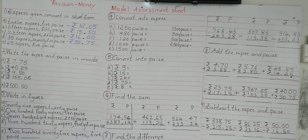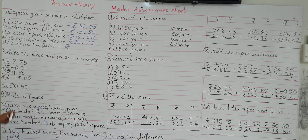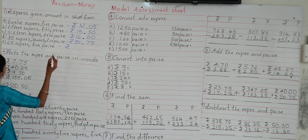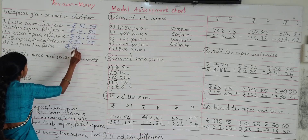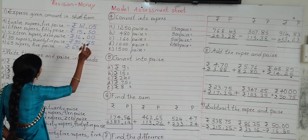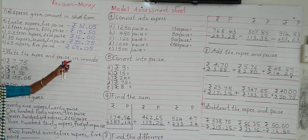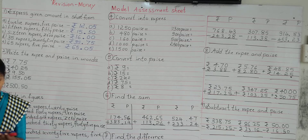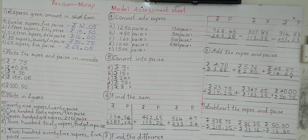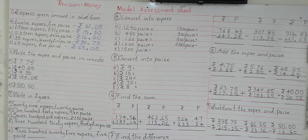Look at the next one: 65 rupees 5 paisa. Write the rupee symbol as shown on the board. Next, how many rupees? 65 rupees. Then insert a dot to separate the rupees and paisa. How many paisa? 5 paisa, so you write 05. So 65 rupees 05 paisa. So we have to express the given amount in short form — write the given amount in figures as shown on the board.